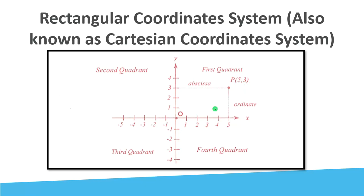For the point (5, 3): we have 5 counts from the origin to the right for the x-value, or abscissa, and 3 counts from the origin upward for the y-component. So this is the location of point P with coordinates (5, 3).